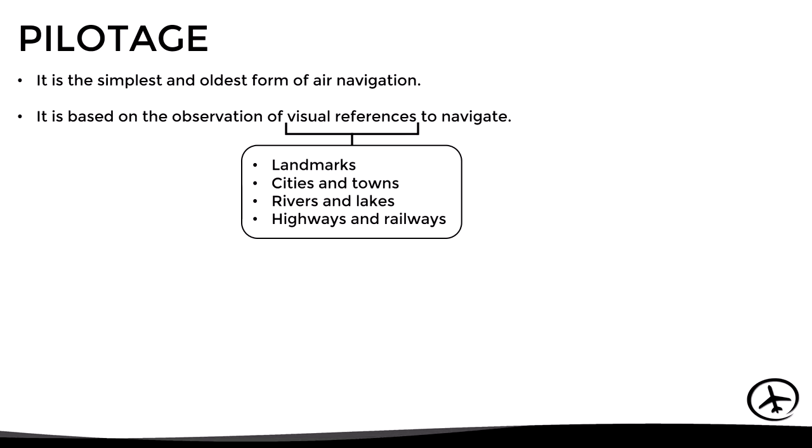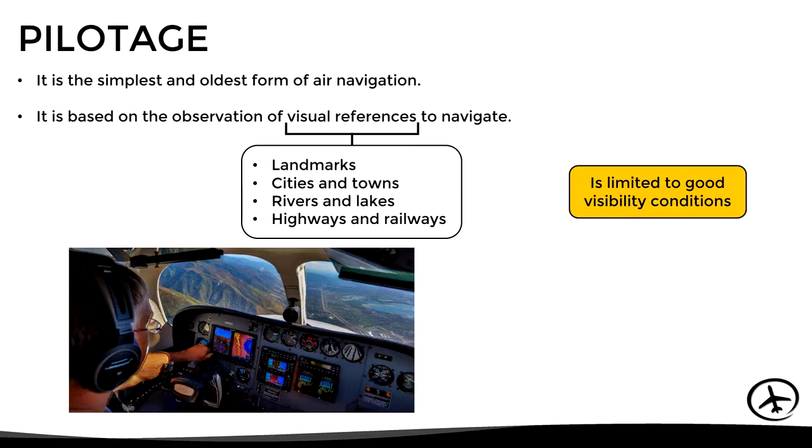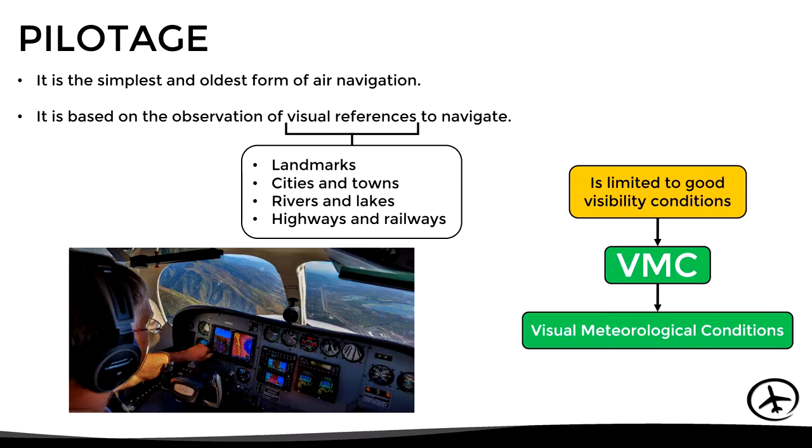These visual references can be landmarks, cities, towns, rivers, lakes, highways, railways, or any other significant reference that can be seen from the aircraft. Since it is necessary to identify these visual references, this method of navigation is limited to good visibility conditions, which are known as VMC or Visual Meteorological Conditions.